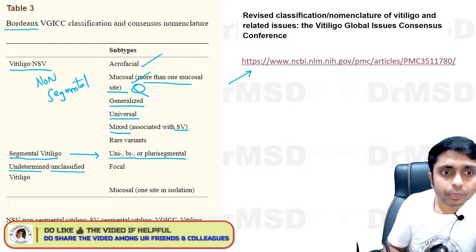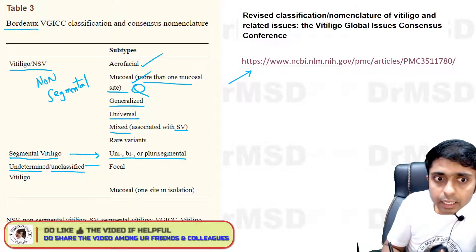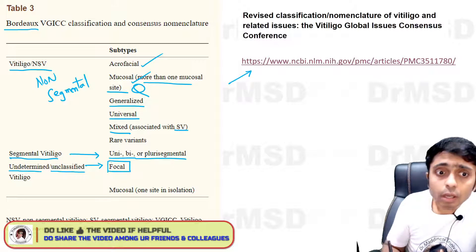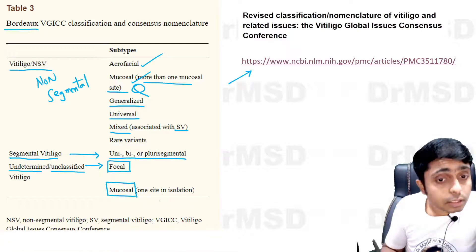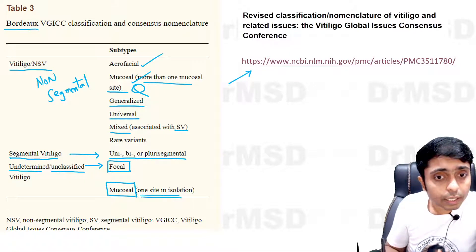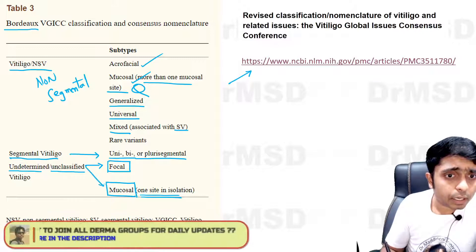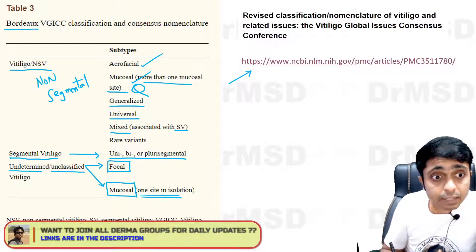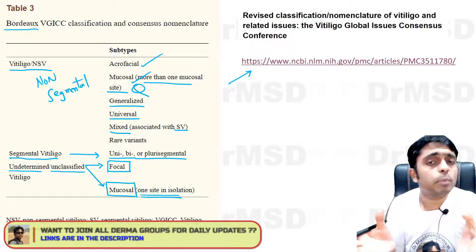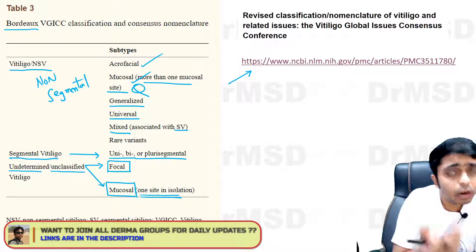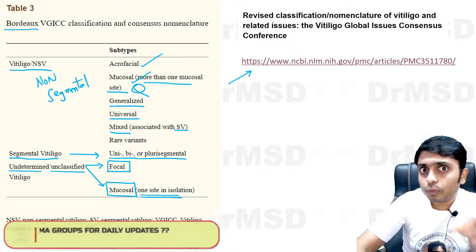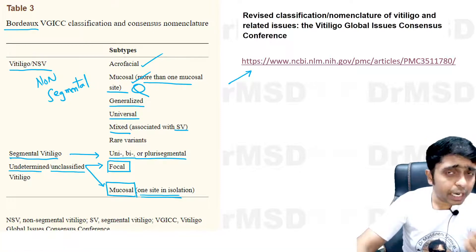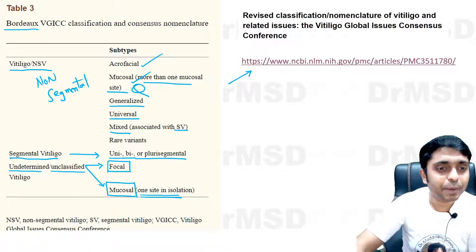In the undetermined or unclassified category we have focal vitiligo and also mucosal vitiligo where only one mucosal site is involved. Both come under undetermined or unclassified because it is not yet sure whether the lesion is segmental or non-segmental.